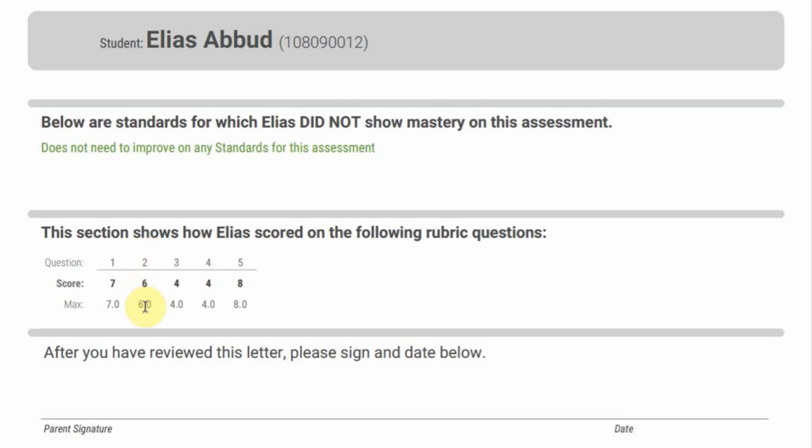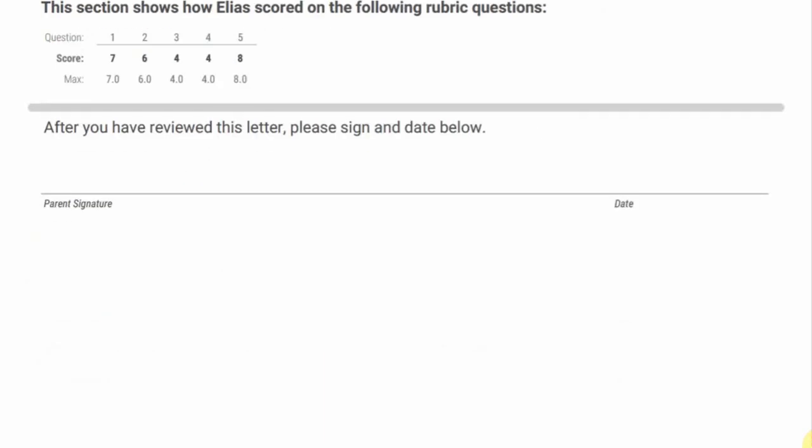There were six questions for question two. He got six right out of six. Four out of four, four out of four, and eight out of eight. So this student in particular got every single question right, so this person got a hundred percent on this test.